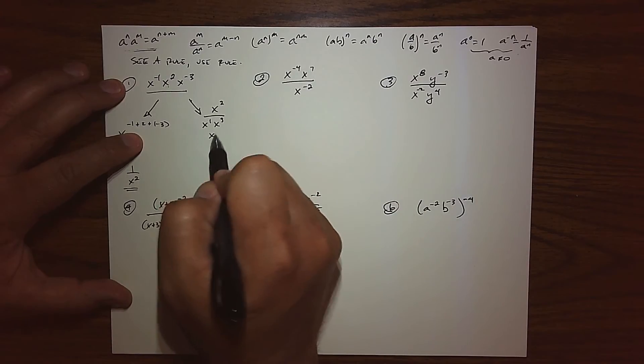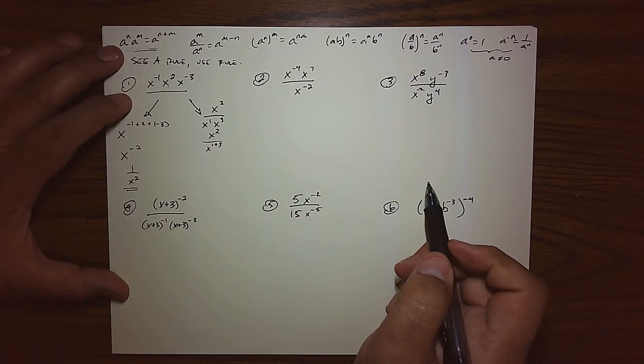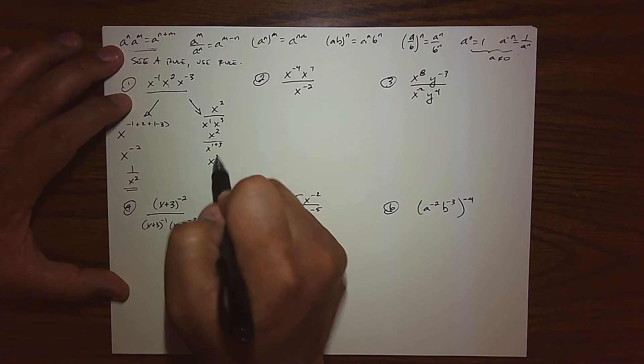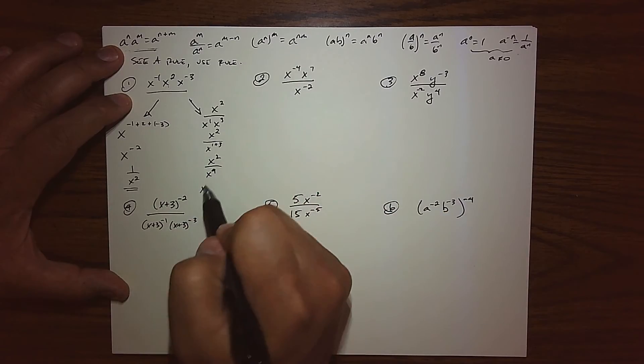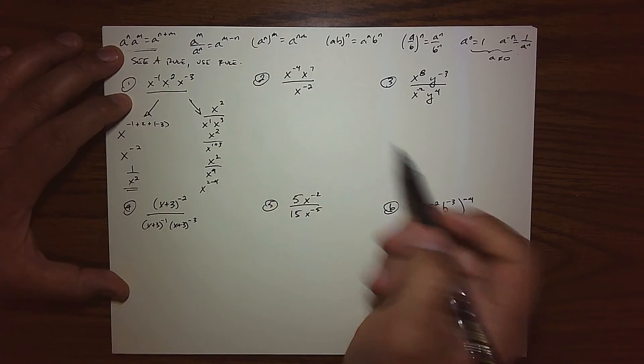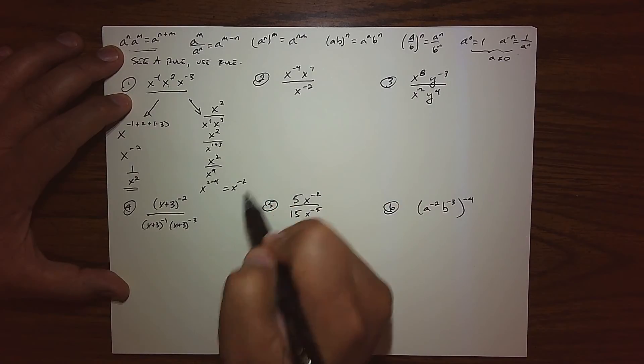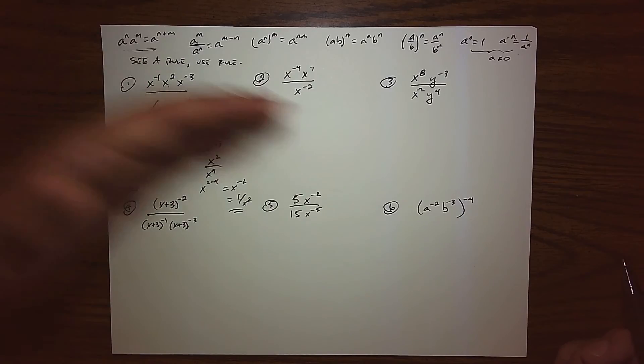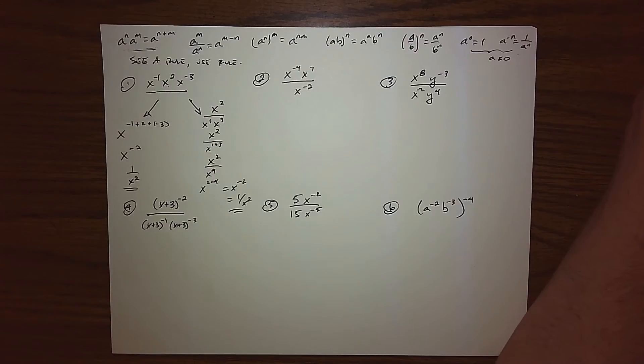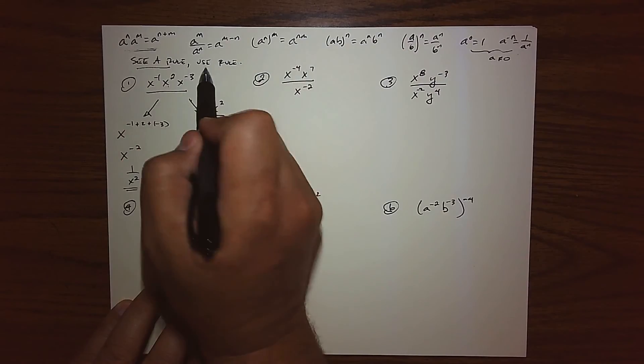Now what we end up having down below is I have an opportunity to use my product rule. So we have x squared over x to the fourth, and now I have an opportunity to use my quotient rule, giving us x to the negative 2, which we already know to be 1 over x squared. So there's two different paths.